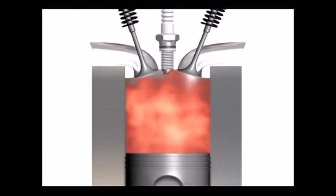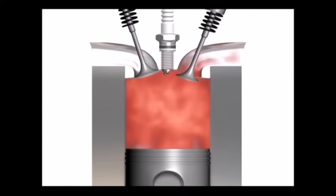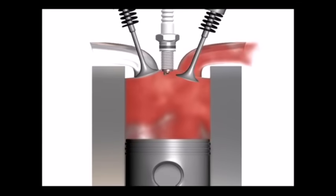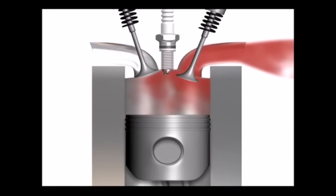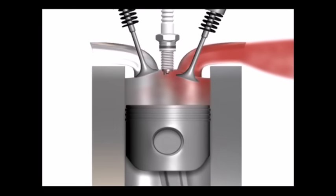The fourth stroke is the exhaust stroke. As the piston begins its second upward stroke, the exhaust valve opens and the burned air-fuel mixture is forced out of the combustion chamber through the exhaust valves.